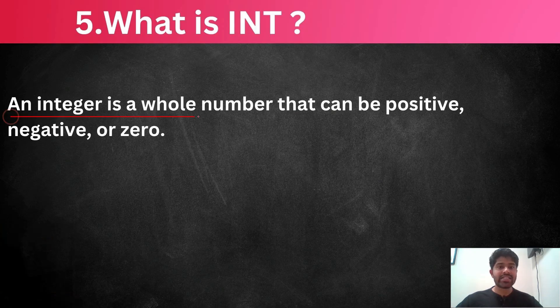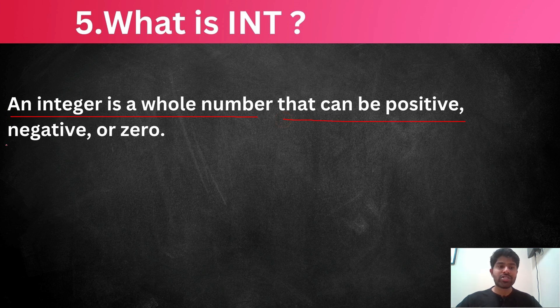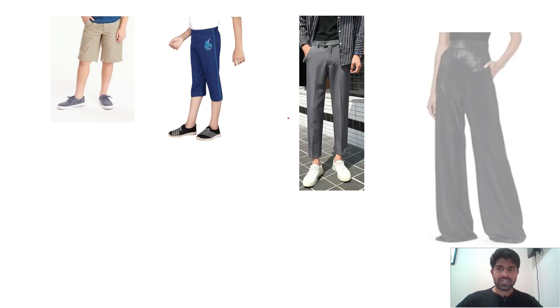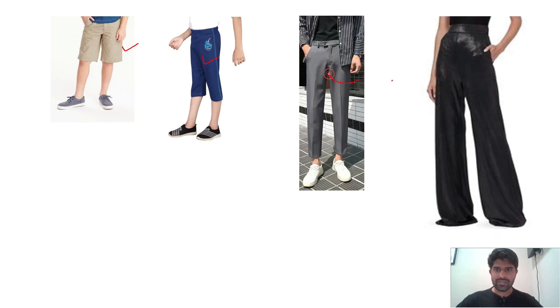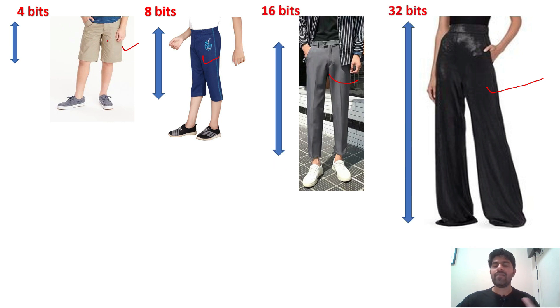And so, what is mean by integer? An integer is a whole number that can be positive, negative or zero. In Boolean, it was only one or zero. Here you will be having both negative, positive and zero also. So, if you see it here, I have taken the different size of pants for each people. You can consider these are the variables. Now, I will check what is the data type for each people. So, first one, I will consider as a 4 bit. Second one, I will consider as 8 bit. This is 16 bit and this is the 32 bit.